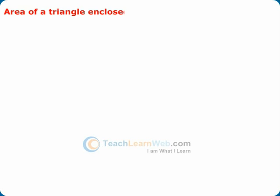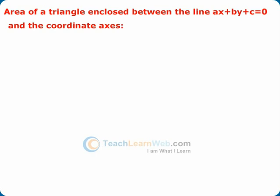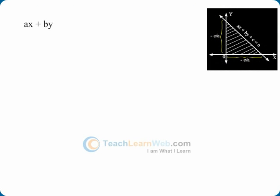Area of a triangle enclosed between the line ax + by + c = 0 and the coordinate axis. Given line is ax + by + c equals 0. ax + by equals -c.